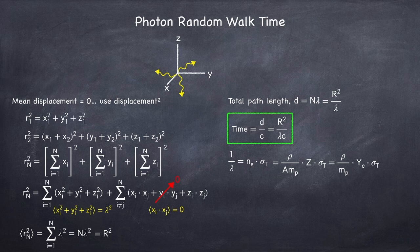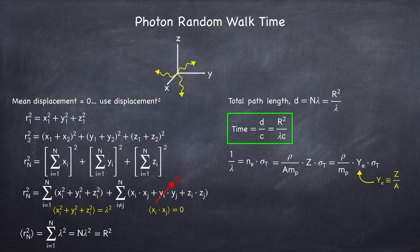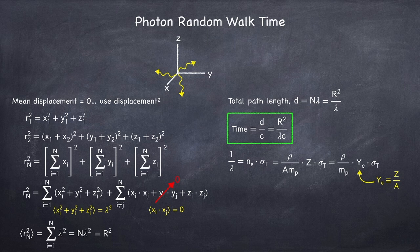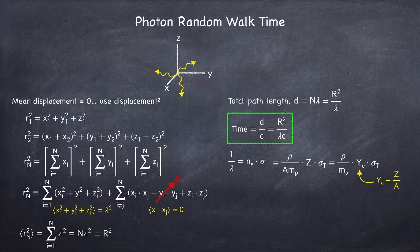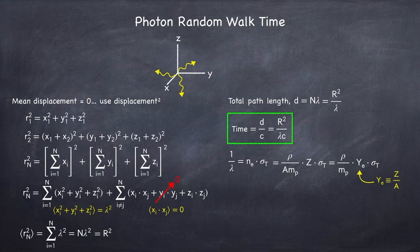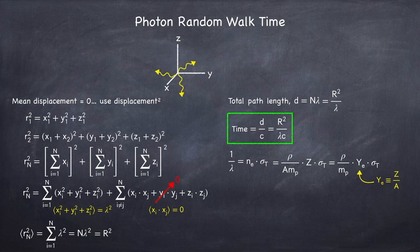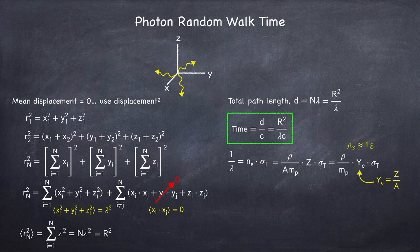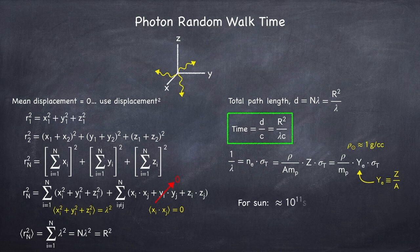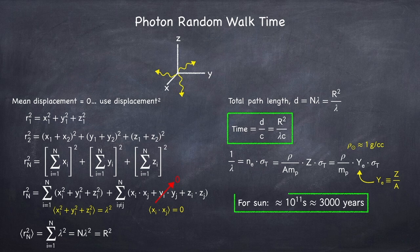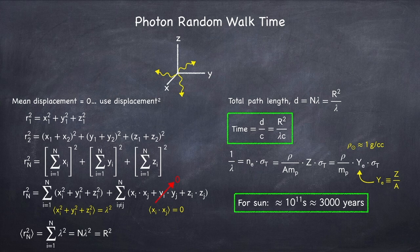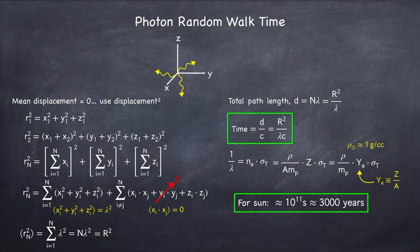I've rewritten here z over a as ye. I've done this because this quantity ye, which is called the electron fraction, comes up a lot in astrophysics. It's always a number between 0 and 1. For normal stars, it's typically between 0.6 and 0.7. In the case of the sun, the density is about 1 gram per cubic centimeter. So plugging all the numbers in, in the case of the sun, the photon random walk time is about 3,000 years. So a photon emitted in the sun's core will take about 3,000 years to get to its surface.